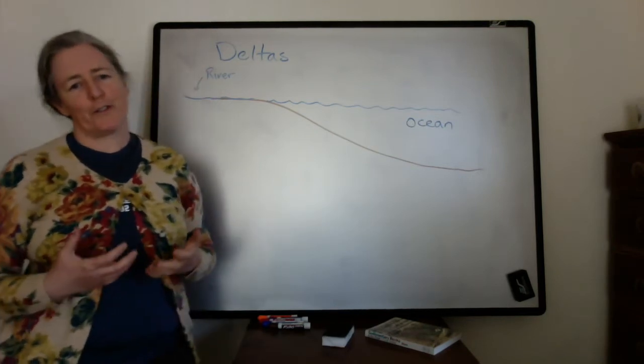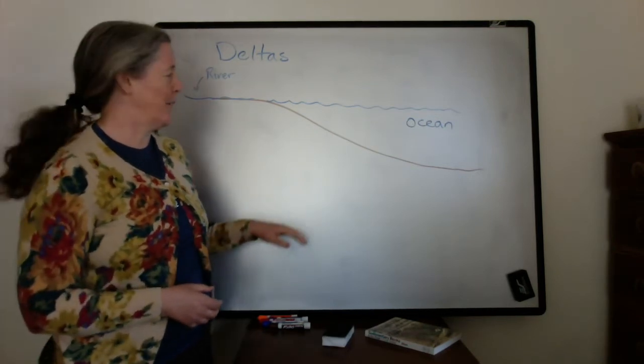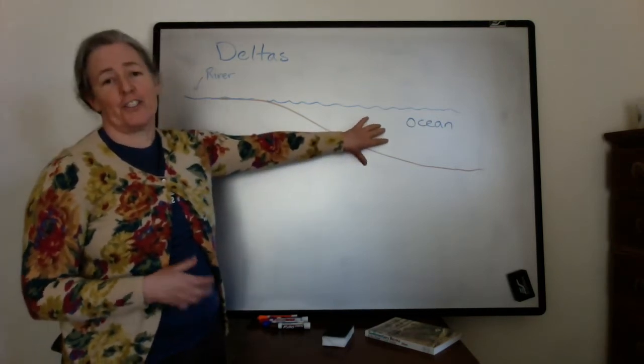Deltas form where rivers flow into a standing body of water, like the ocean or lakes.